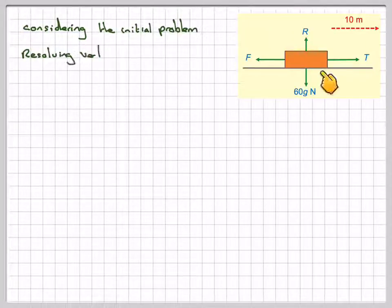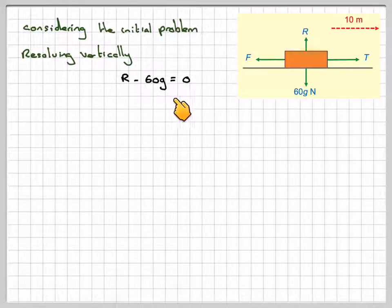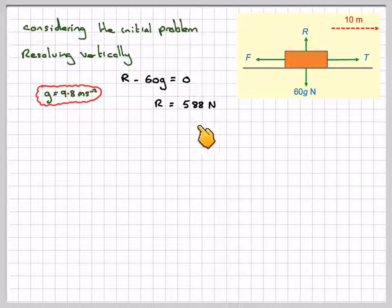So we have a block here. We have a tension, a friction. It is rough. And the coefficient of friction is 0.25. We've got a weight acting down here, 60g and a reaction going upwards. So resolving vertically, we have R minus 60g is equal to 0. R will be equal to 588 newtons if we take g to be 9.8 metres per second squared.